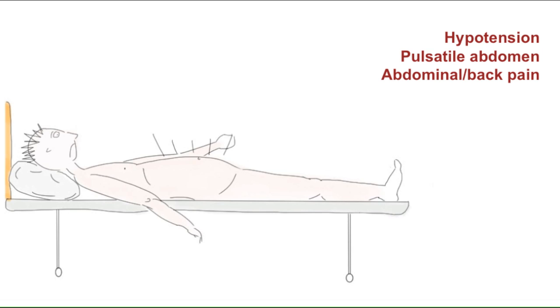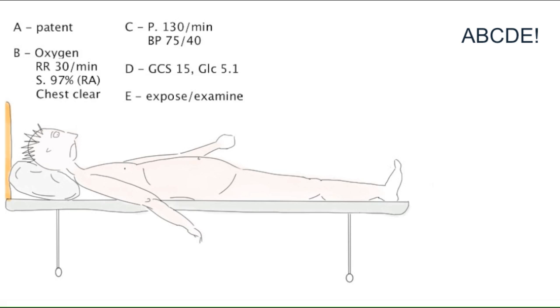As a good junior doctor, you realize that the prompt diagnosis of a ruptured AAA is absolutely critical. As ever, run through ABCDE logically, so that's airway, breathing, circulation, considering GCS, neurology, blood glucose and exposing and examining the patient.